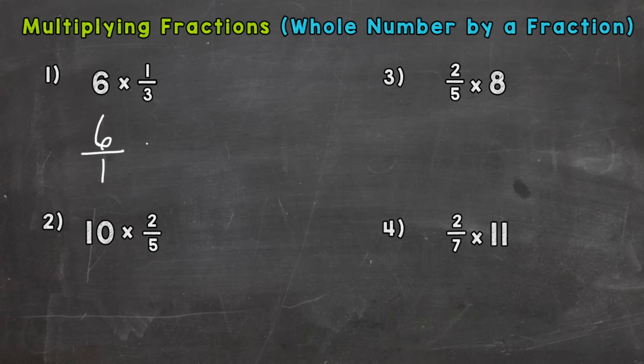When we multiply fractions all we do is go straight across, numerator times numerator, denominator times denominator. So 6 times 1 is 6 and 1 times 3 is 3, so we get 6/3.